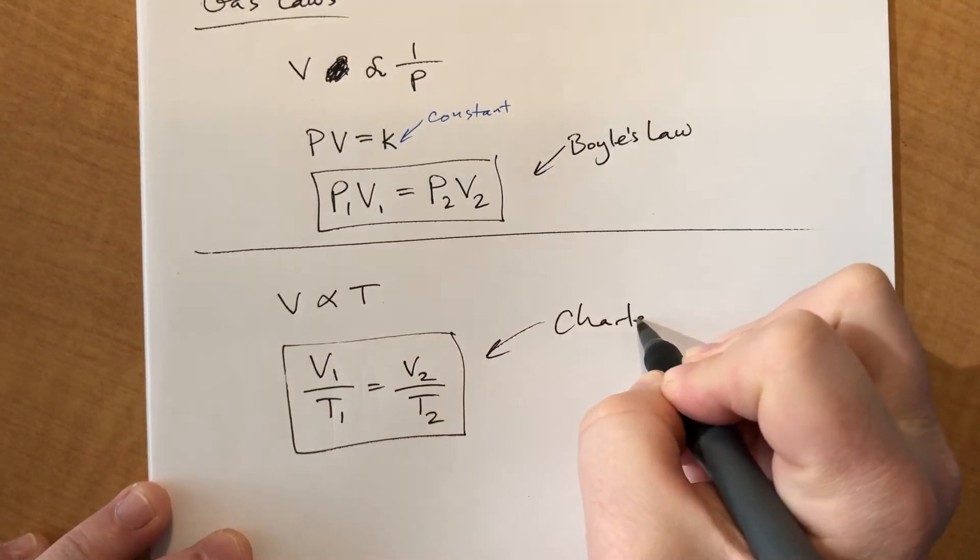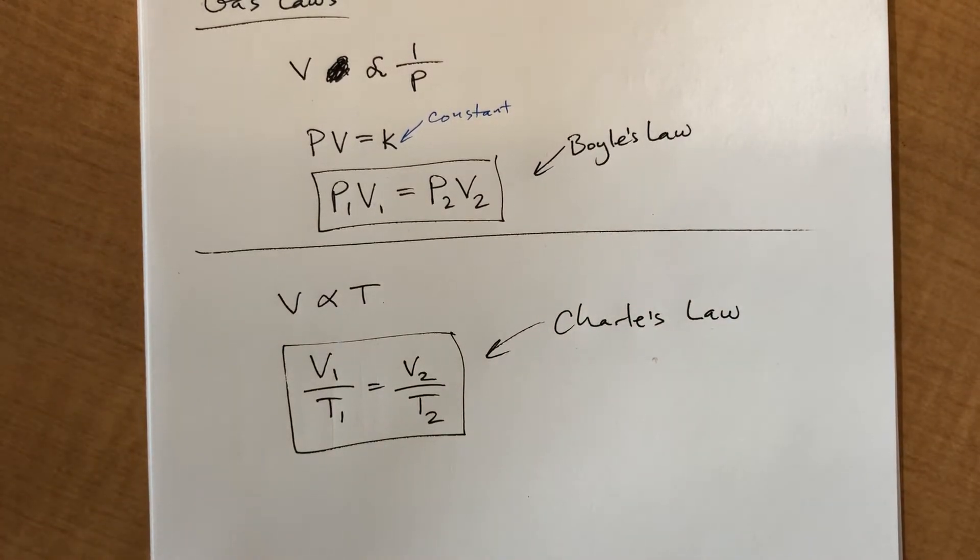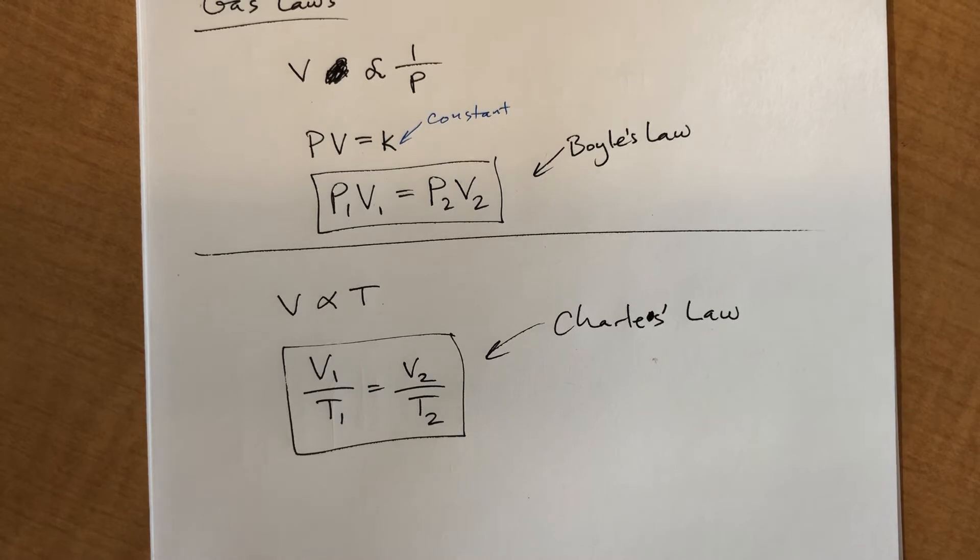So this means we can follow the same logic. Volume divided by temperature should be equal to some constant. We can get this equation. V1 over T1 equals V2 over T2. This is known as Charles' Law. I do not care if you know these guys' names. Let's try an example and see how this works.